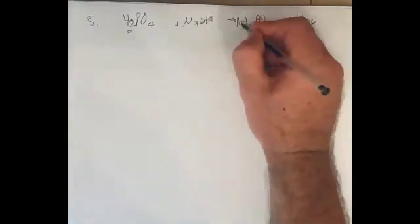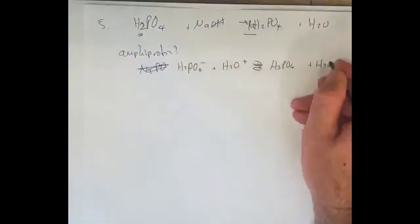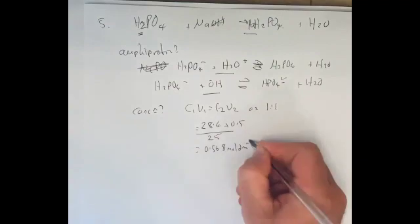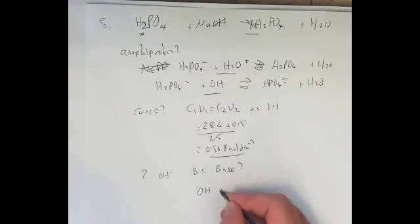H3PO4 acts as any acid. Reacts with hydroxide to make water neutralization. NaH2PO4 is amphoteric. It's going to react with hydronium and hydroxide ions, as we can see. Concentration, C1V1 is C2V2. See the answer on the screen. Why does it act as a Bronsted-Lowry base? Because OH- plus H+ is H2O.